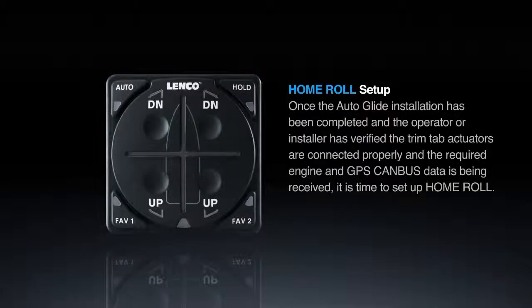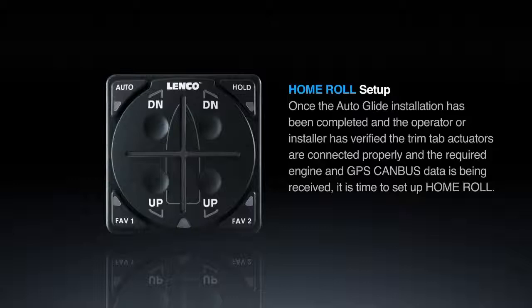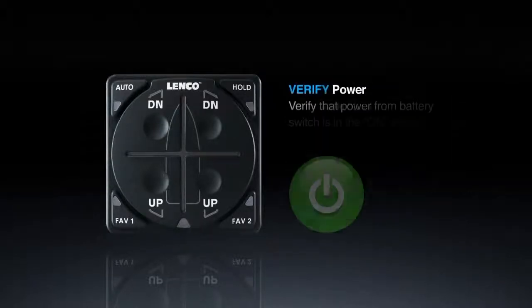Home roll setup. Initiate setup mode. Once the auto glide installation has been completed and the operator or installer has verified the trim tab actuators are connected properly and the required engine and GPS data is being received, it's time to set up home roll.